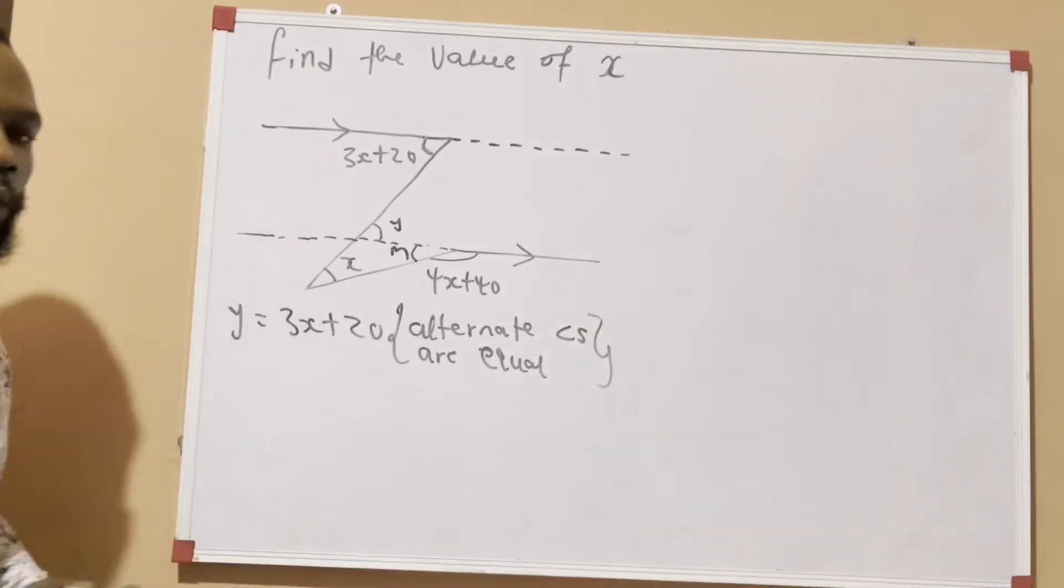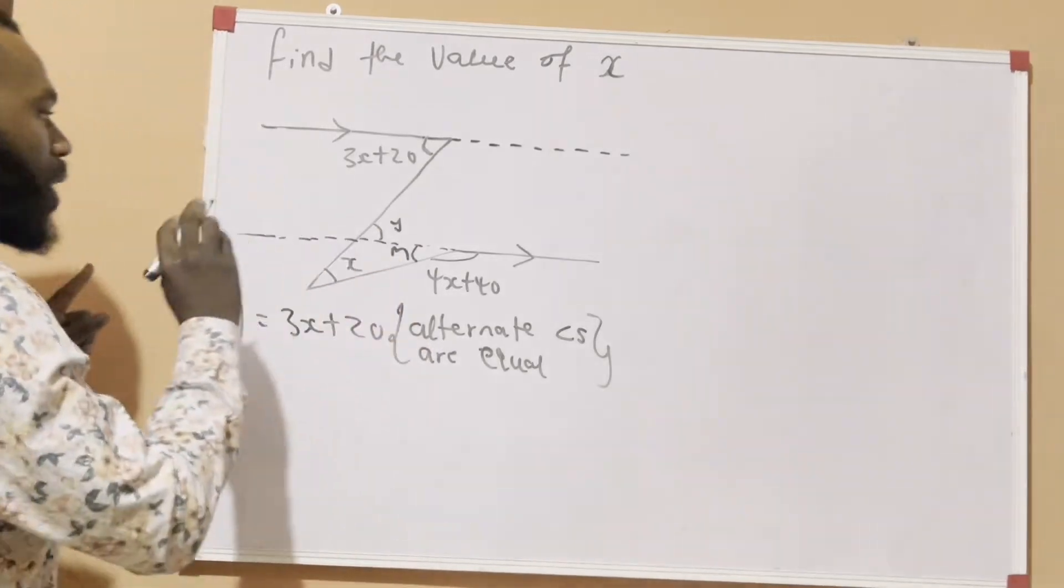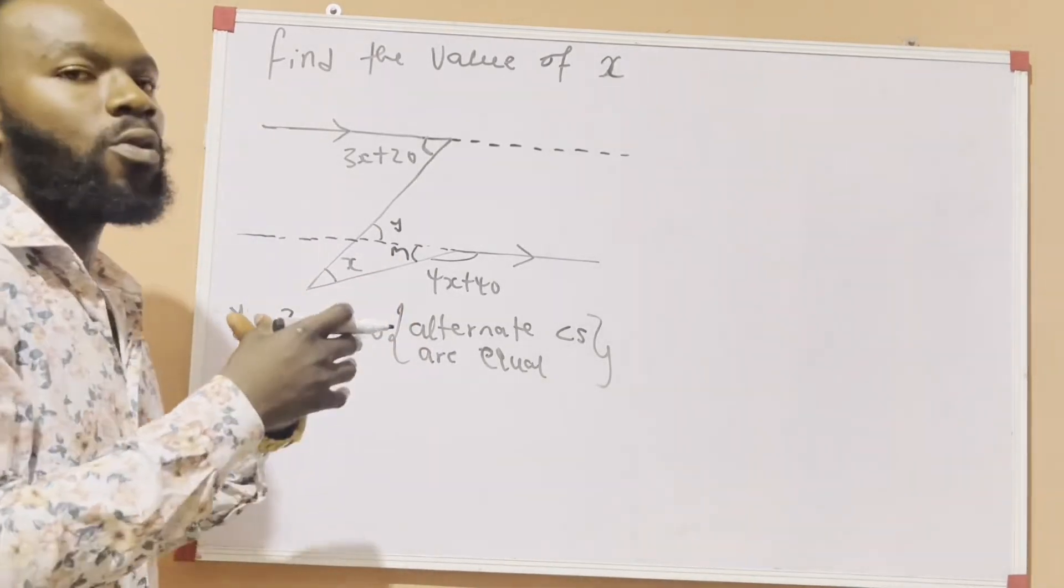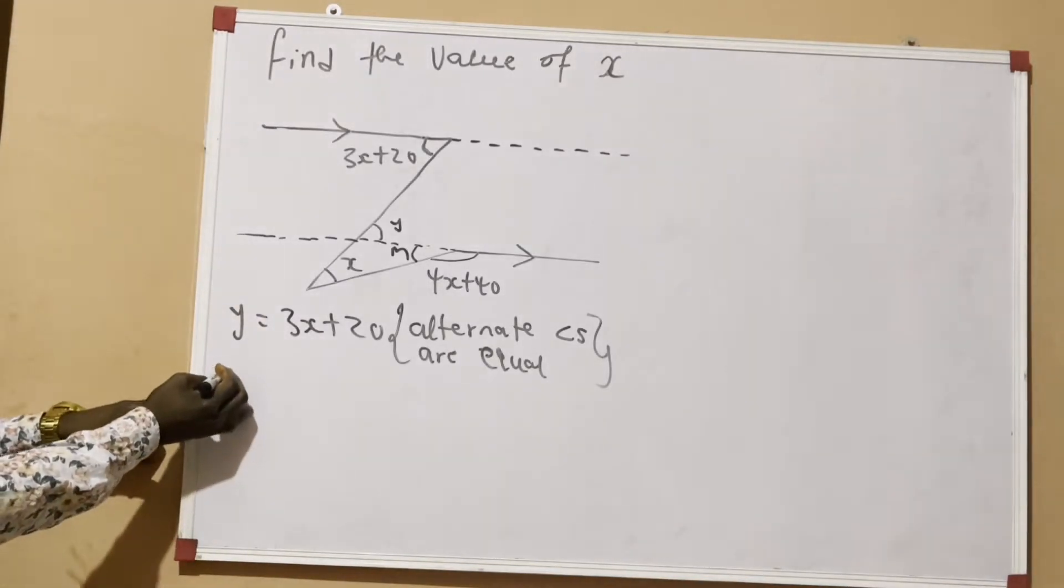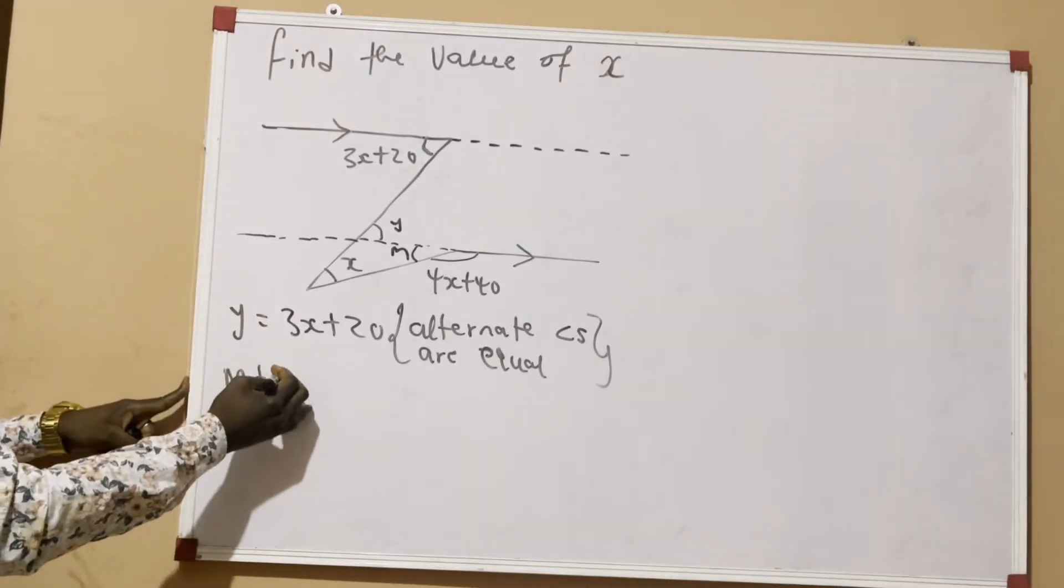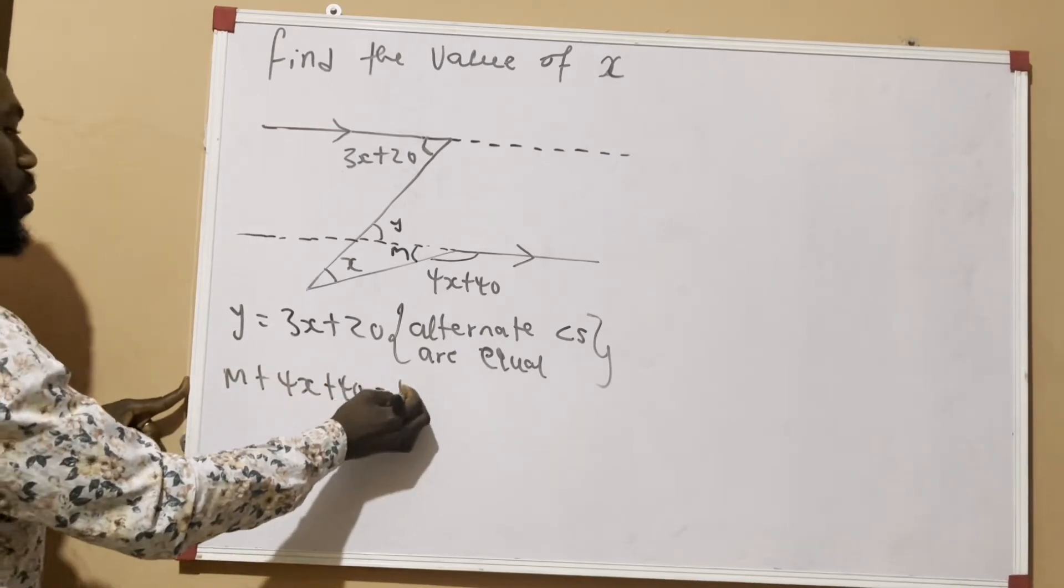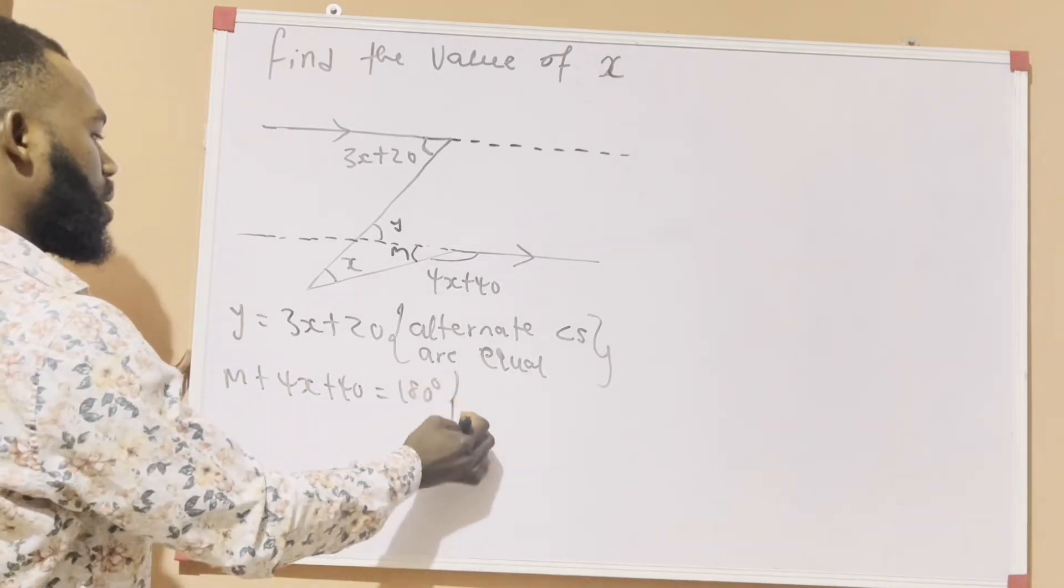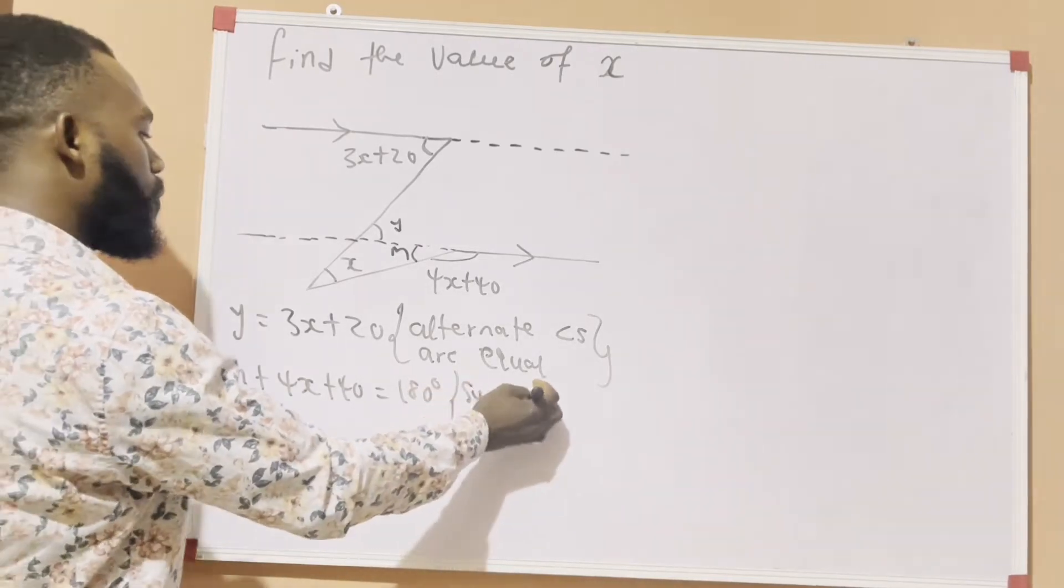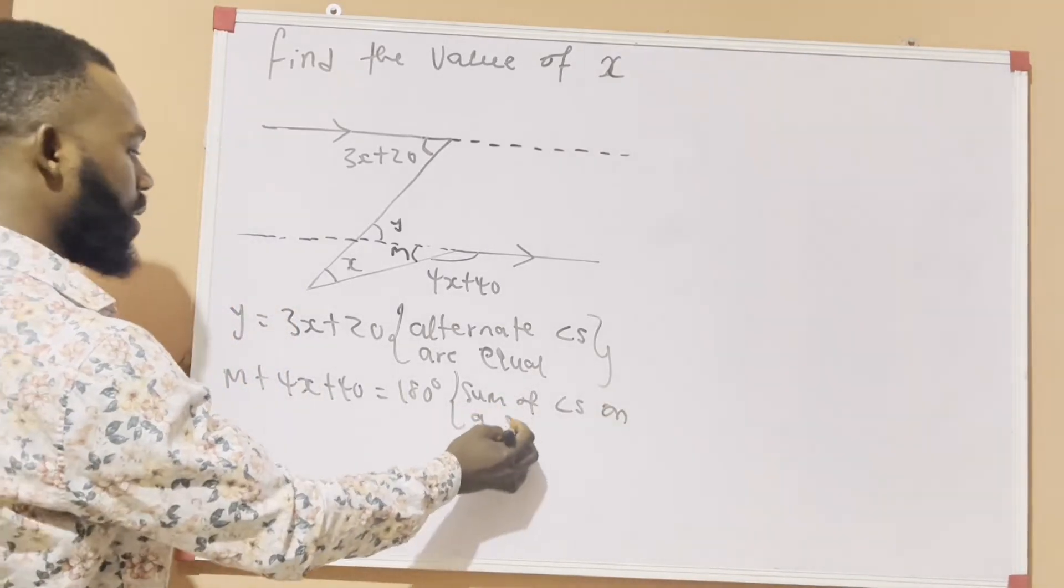Again, so for n now, we are going to use an angle on a straight line. So it means n plus 4x plus 40 is equal to 180 degrees. Why? Sum of angles on a straight line. Very simple.